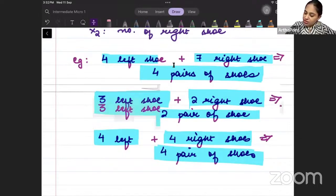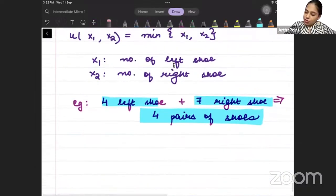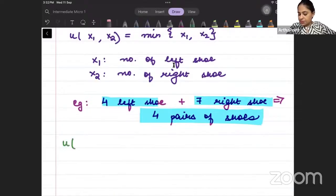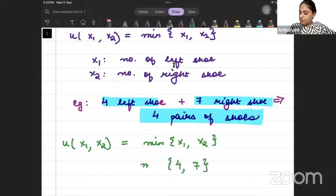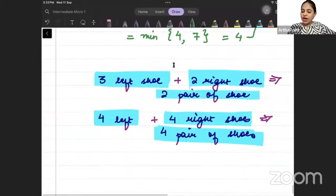Can we try to check this through the utility function? So, utility from x1, x2, this is min of x1, x2. How many left shoe you have? 4. How many right shoes you have? 7. So, what will be min of 4 and 7? 4. So, 4 pair of shoes hi toh bano. Extra 3 shoes are of no use.